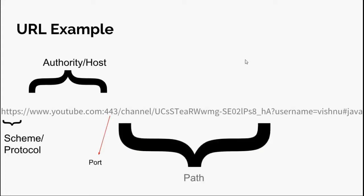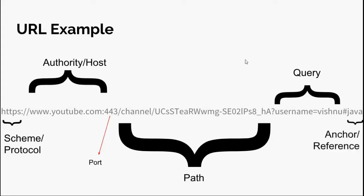The path part specifies the path of the file. The query part specifies input characters to the web page or browser — it is useful to pass values from one page to another. The anchor or reference is used to point to a particular thing on the resource.